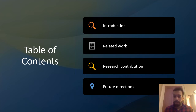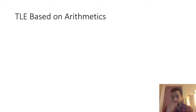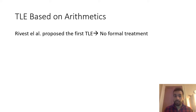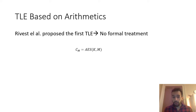Now I'm going to speak about the related work in the field of time-lock encryption. First, there are time-lock encryptions based on arithmetic. The first and most well-known one is based on Rivest et al. At that time, the authors didn't provide any formal treatment. It operates as follows: the initiator of the puzzle encrypts the message M with a secret key K by using a symmetric encryption scheme — in that case, AES.